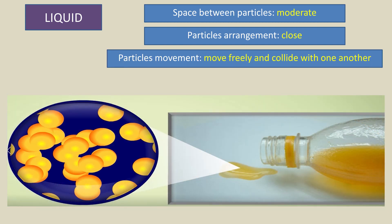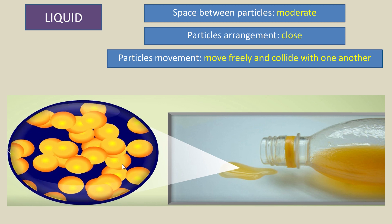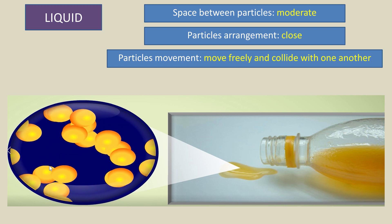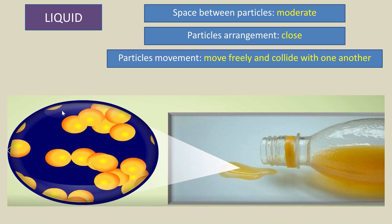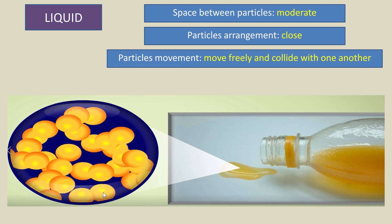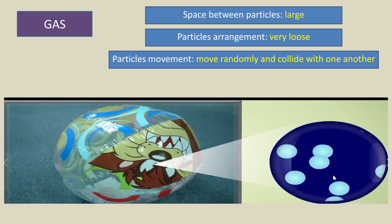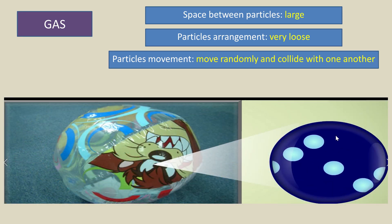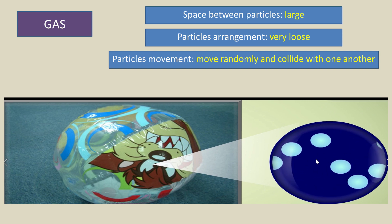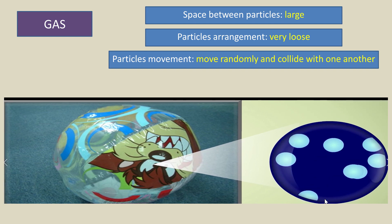For liquid particles, the space between particles is moderate. In terms of movement, the particles move freely and collide with one another. For gas particles, the space between particles is large. The particles are arranged very loosely. In terms of movement, the particles move randomly and collide with one another.